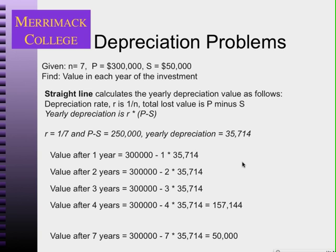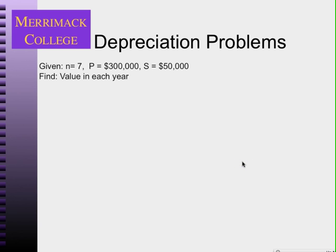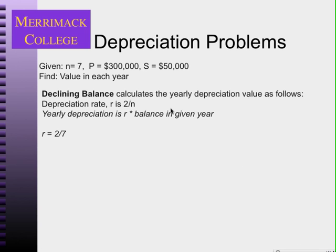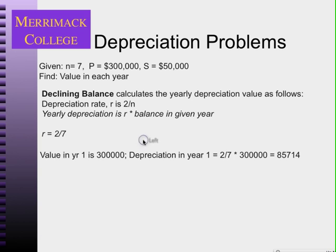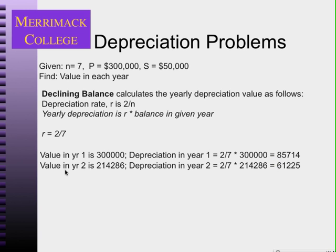Using the declining balance method, the depreciation rate is 2 divided by n, so 2/7 in this case. We multiply that by the balance in each given year. The value at the start of year 1 is $300,000, so the depreciation in year 1 is 2/7 times $300,000, which equals $85,714. The value in year 2 is $300,000 minus $85,714, which equals $214,286. We then multiply $214,286 by 2/7 to get the depreciation in year 2, which equals approximately $61,224.